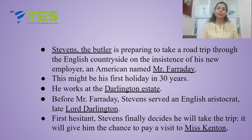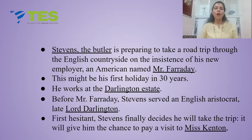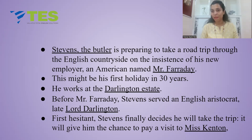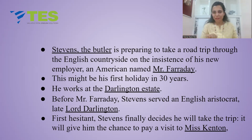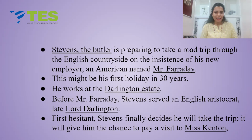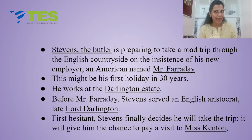Stevens the butler is preparing to take a road trip through the English countryside on the insistence of his new employer, an American named Mr. Faraday. This might be his first holiday in over 30 years. He works at the Darlington Estate. Before Mr. Faraday, Stevens served an English aristocrat, the late Lord Darlington. First hesitant, Stevens finally decides he will take the trip. It will give him the chance to pay a visit to Miss Kenton.